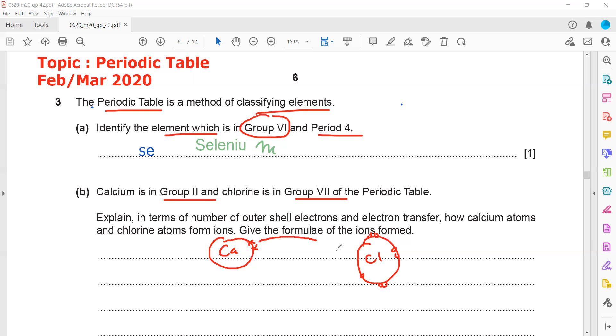When one calcium loses electron chlorine will gain that so chlorine will get a negative charge. Calcium will be plus 1. Then there will be another chlorine atom which is having 7 electrons so that gains another electron so it will be minus 1 so it will be plus 2 and minus 1.